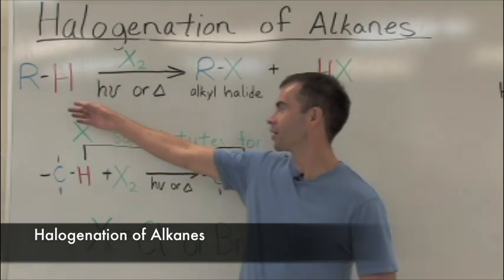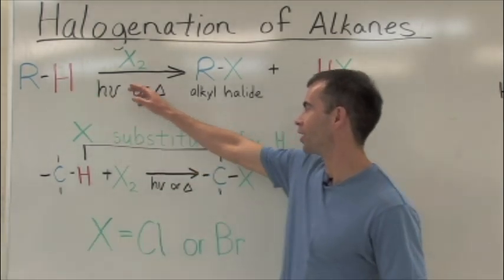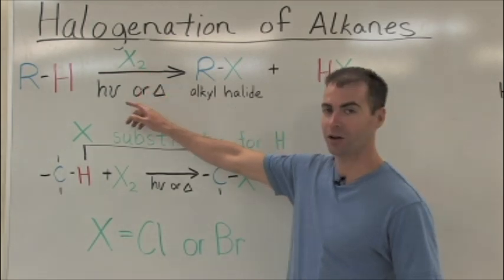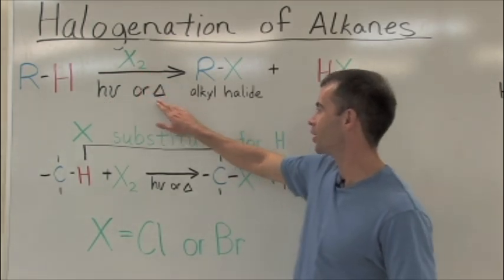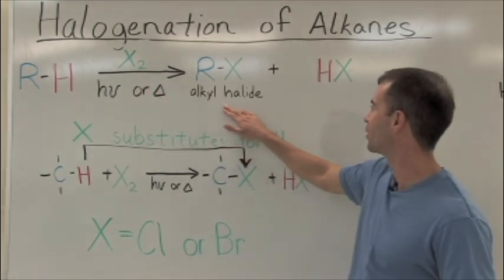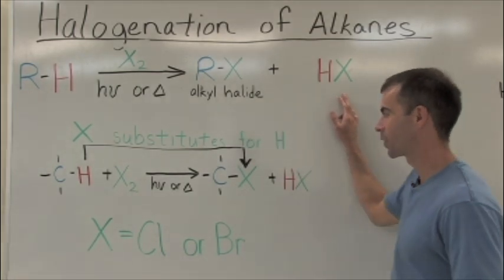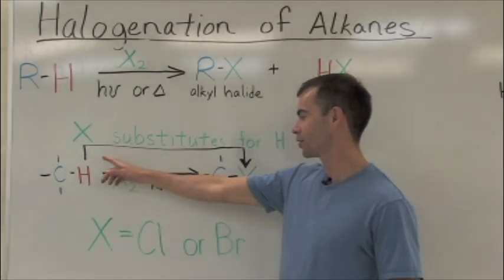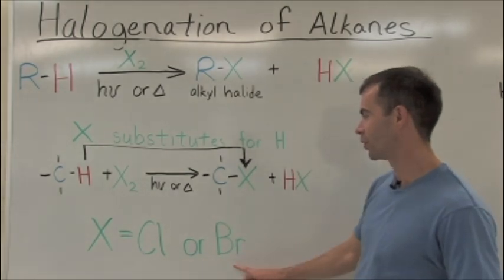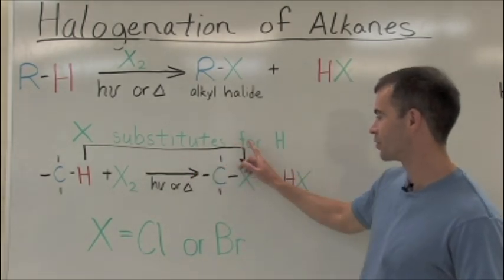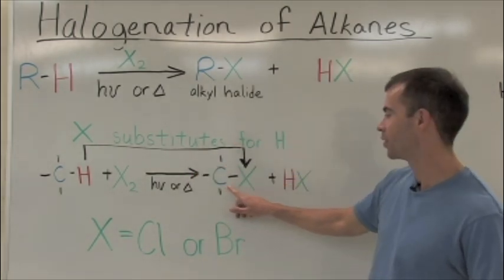We have an alkane reacting with a halogen molecule under the conditions of light or heat to form an alkyl halide and a hydrogen halide. The halogen X, which can be chlorine or bromine, substitutes for the hydrogen, forming the alkyl halide.